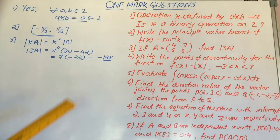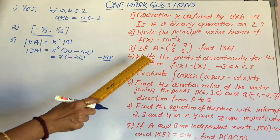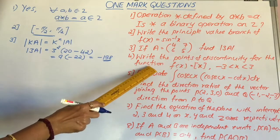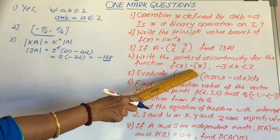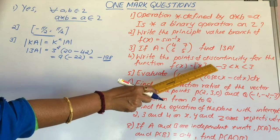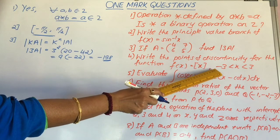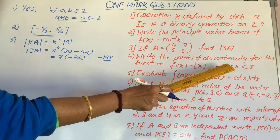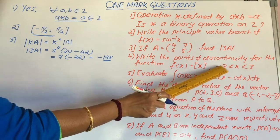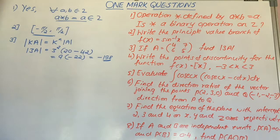Now consider question 4. Write the points of discontinuity for the function f of x equal to greatest integer x where x lies between minus 3 and 3. Minus 3 less than x less than 3.